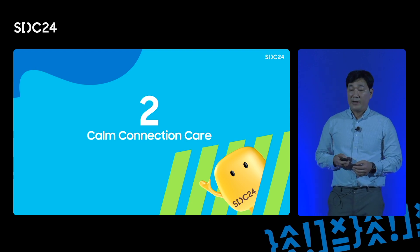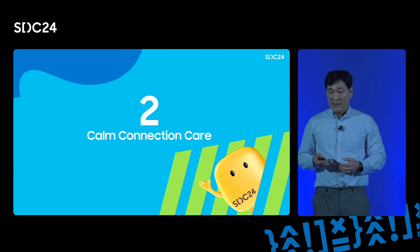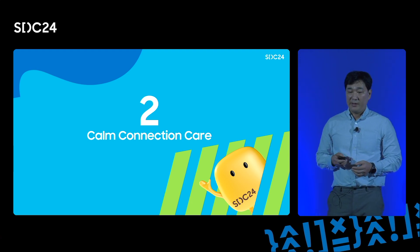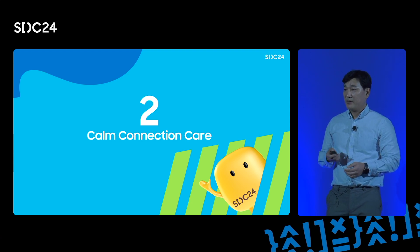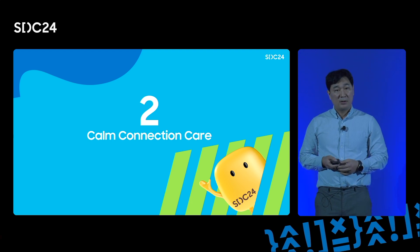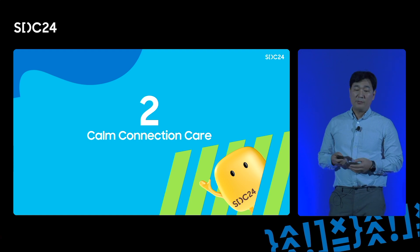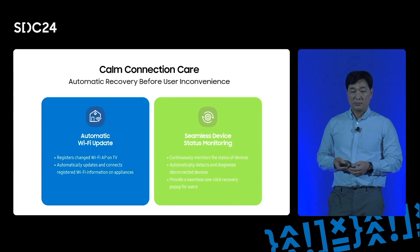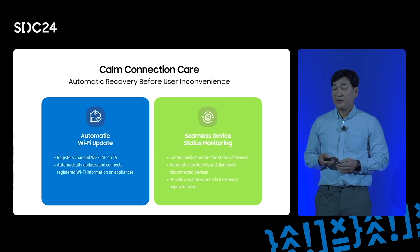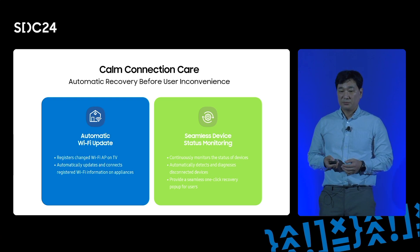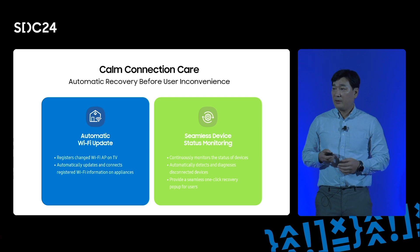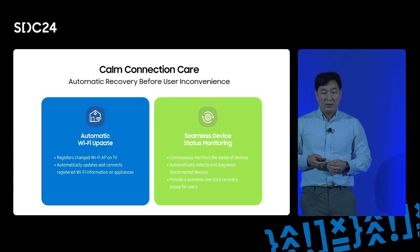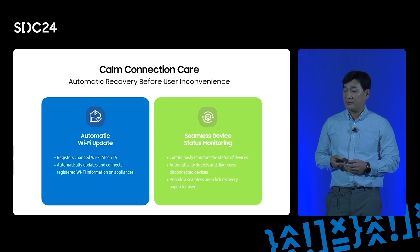Since the release of the Offline Diagnostic tool, we have dedicated time to analyzing customer feedback and diagnostic patterns. The initial Offline Diagnostic required users to manually execute the tool, identify the issue, and perform the recovery, which was difficult. To solve this problem, SmartThings has developed a new feature called Calm Connection Care. Calm Connection Care provides automatic connection care for improved user experience and ease. A helper device in the home can automatically detect offline devices and restore their connection without any user intervention, meaning users no longer need to go through complex diagnostic processes to keep their devices working.